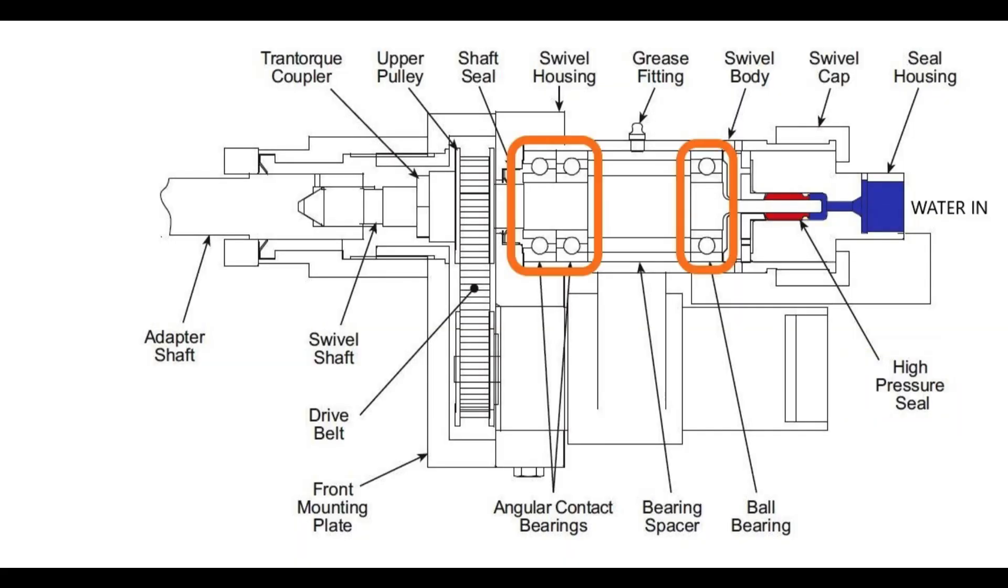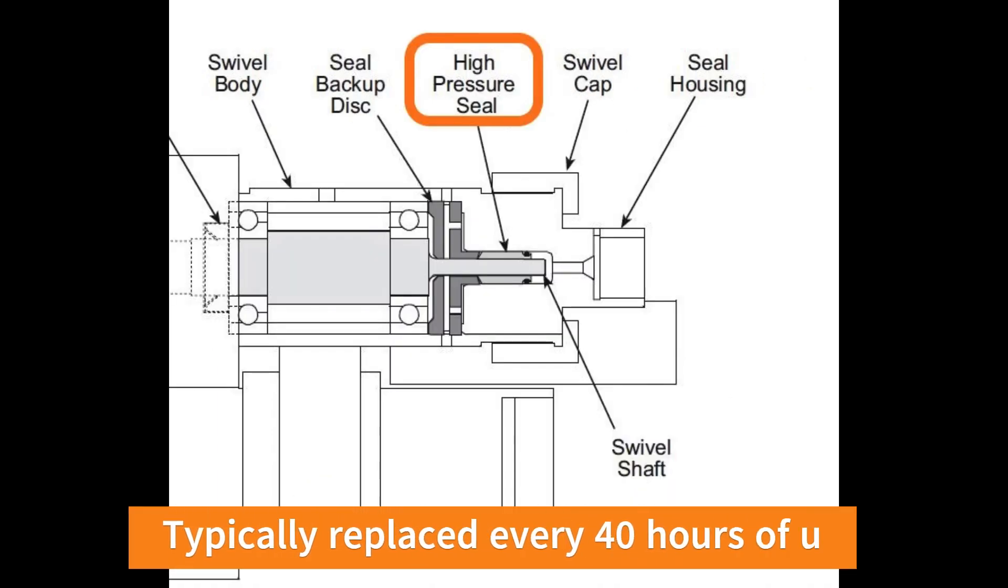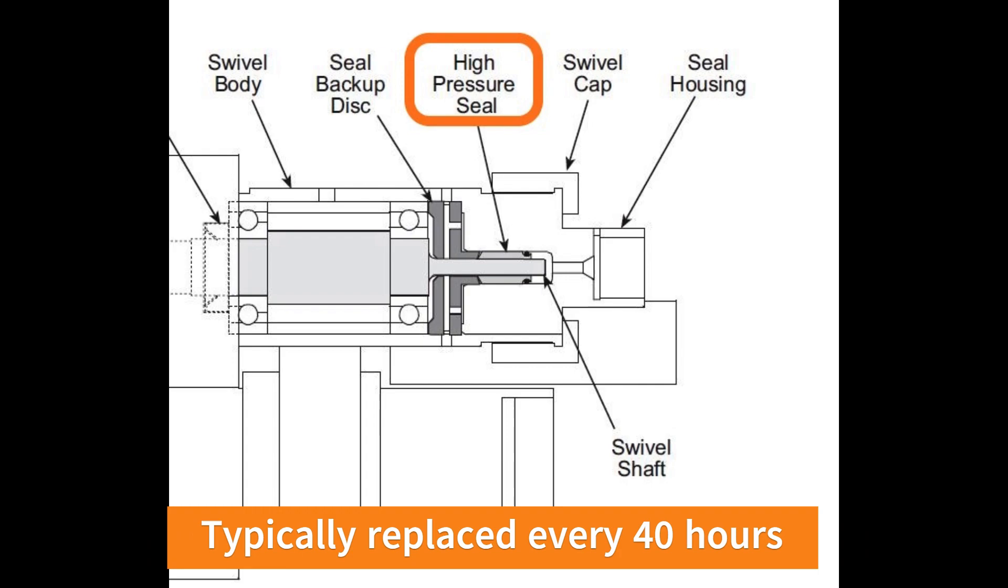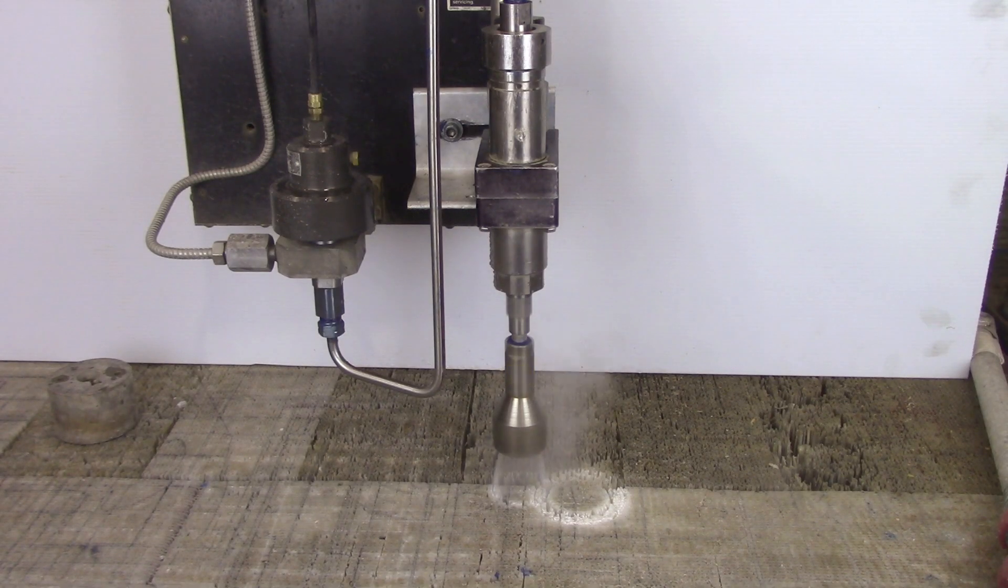If water enters the bearings, the lubrication can be washed away and ruin the bearings. The shaft seal is typically replaced every 40 hours of use. All components wear out more quickly at higher rotary speeds.